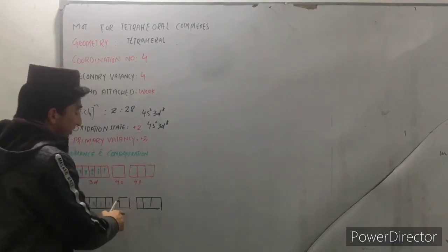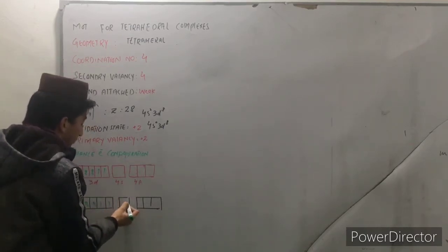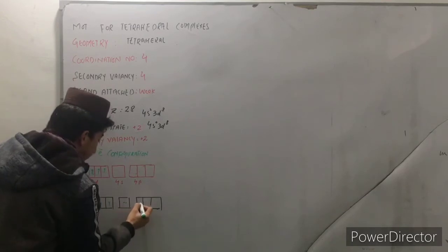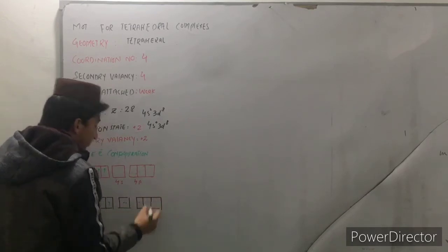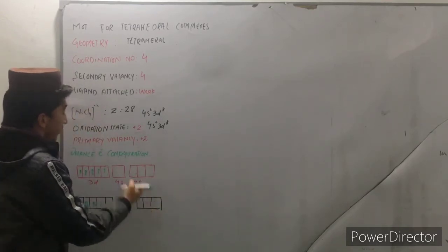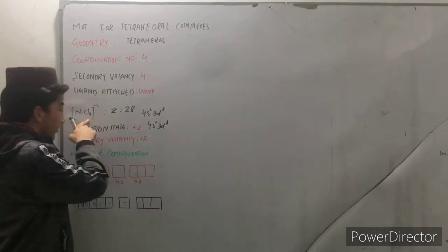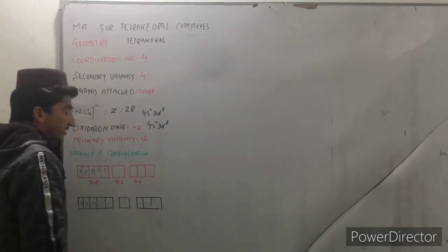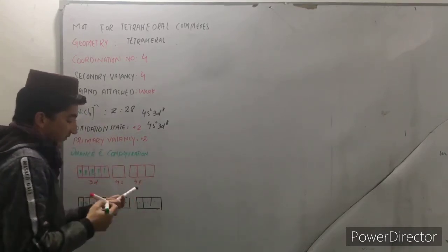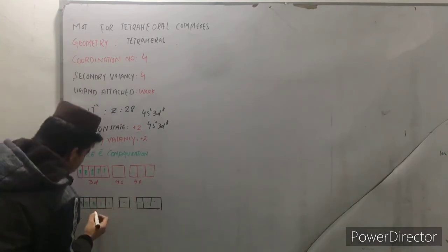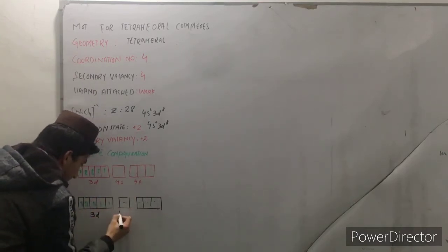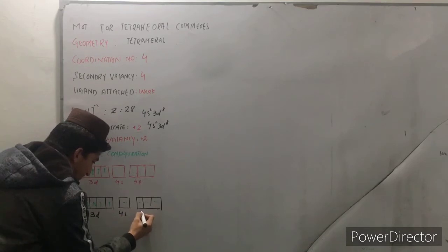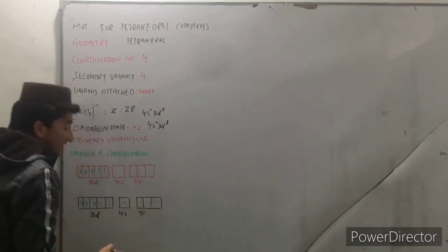The pairs will be donated to this 4s and this 4p because as you know we have 4 chlorines. So the 4 pairs will be donated to this 4s and 4p. Now this is 3d, this is 4s and this is 4p. What is the hybridization over here?